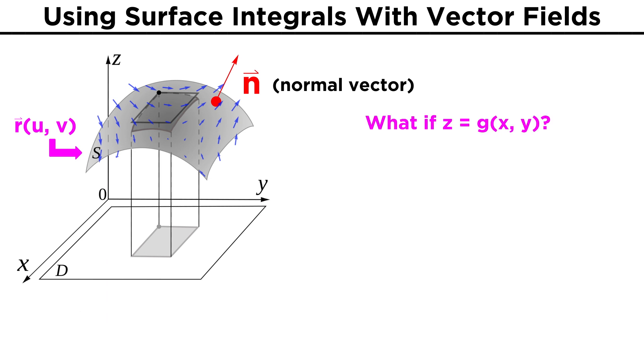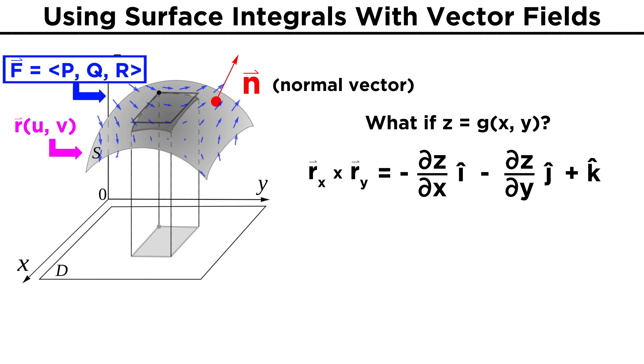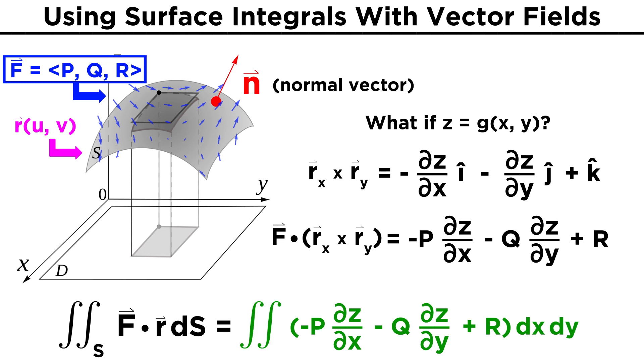This is the expression we can use to calculate the flux in any general case, but let's once again consider a surface where Z is a function of X and Y. We saw in this case that R X cross R Y equals negative dZ dX I minus dZ dY J plus K. Recall how we can write vector fields in components P, Q, R, so the dot product F dot R X cross R Y ends up being negative P dZ dX minus Q dZ dY plus R. And so in this case our flux becomes the double integral of this expression dX dY.